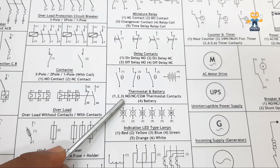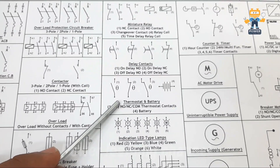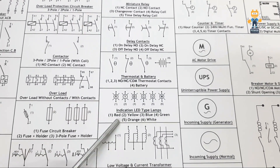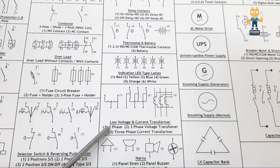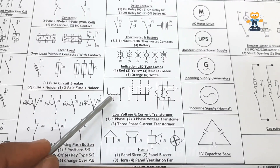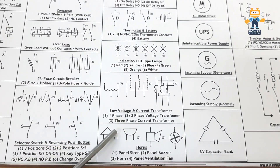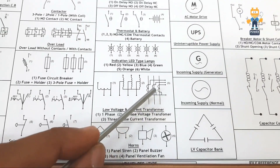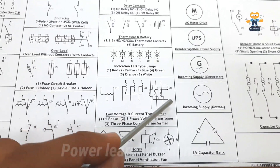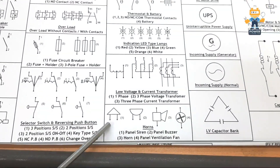Here we have the thermostat and battery symbols. The thermostat has three contacts: normally open, normally closed, and common. Here is the indication lamp symbol. We also have voltage and current transformers: number one is a single-phase transformer, number two is a three-phase voltage transformer (PT), and the three-phase current transformer (CT).